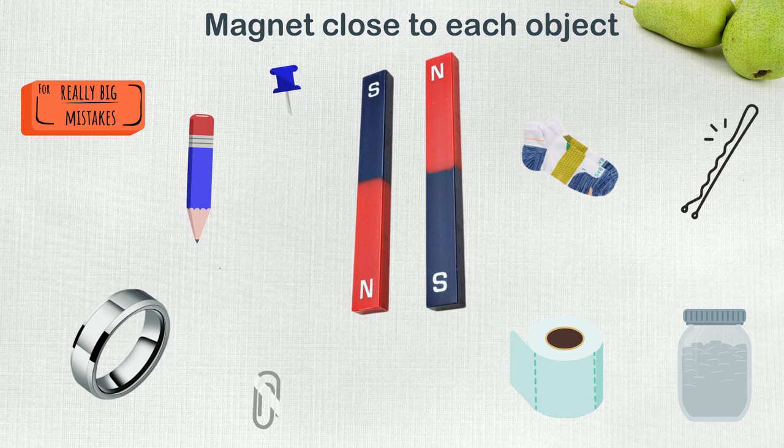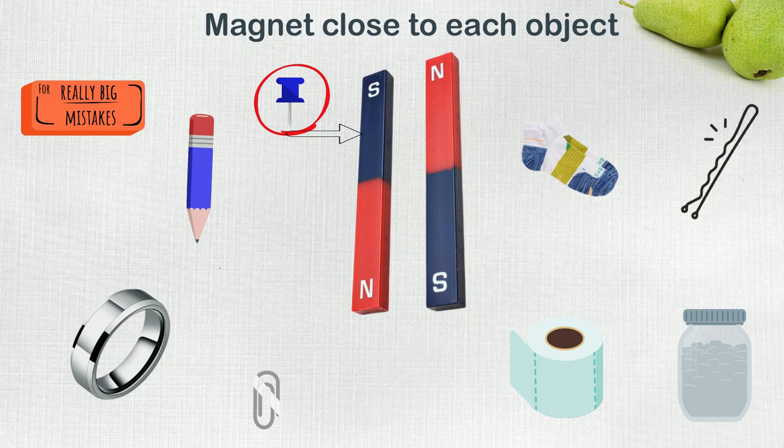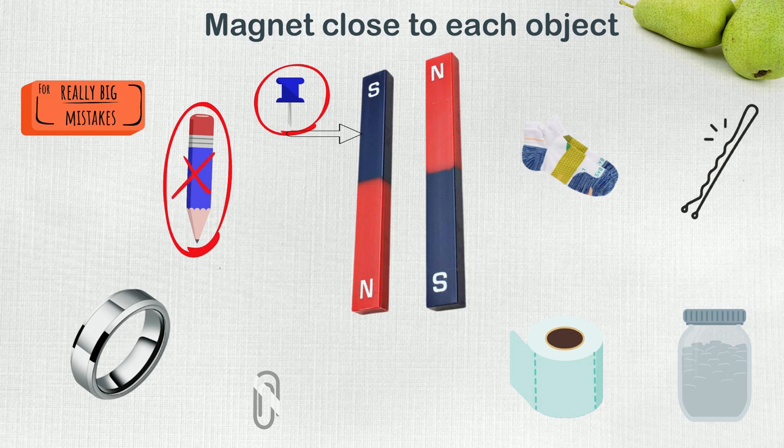The nail quickly got pulled up by the magnet, but the pencil did not, nor did the eraser.